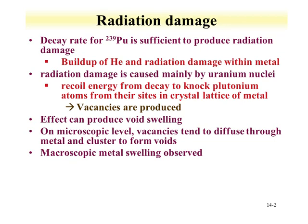We left off previously discussing plutonium metal and its corrosion properties. We want to continue this discussion in the context that plutonium is radioactive. Radiation damage can be induced in plutonium metal, and the decay rate of plutonium-239 is sufficient for the production of radiation damage. This includes the buildup of alpha particles or helium in the material, and radiation damage due to the emission of the alpha particle and the recoil of the uranium daughter.